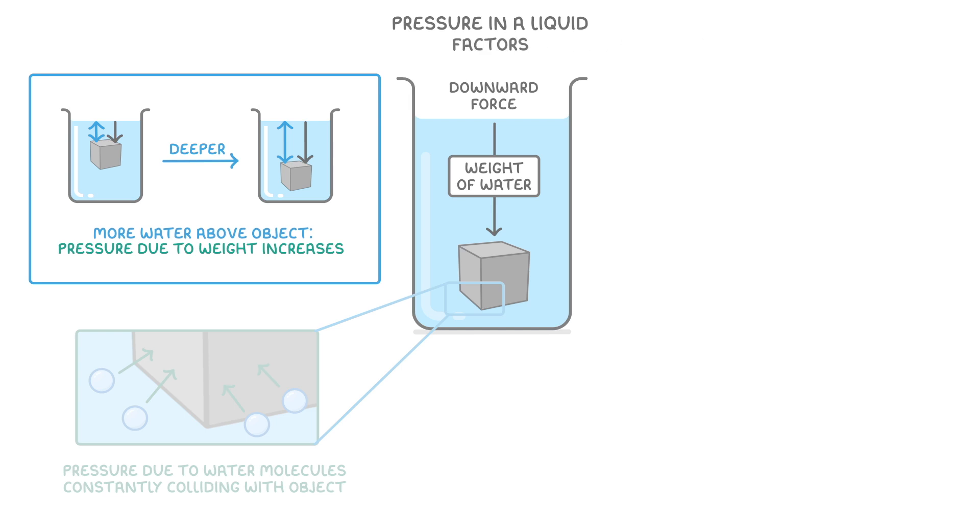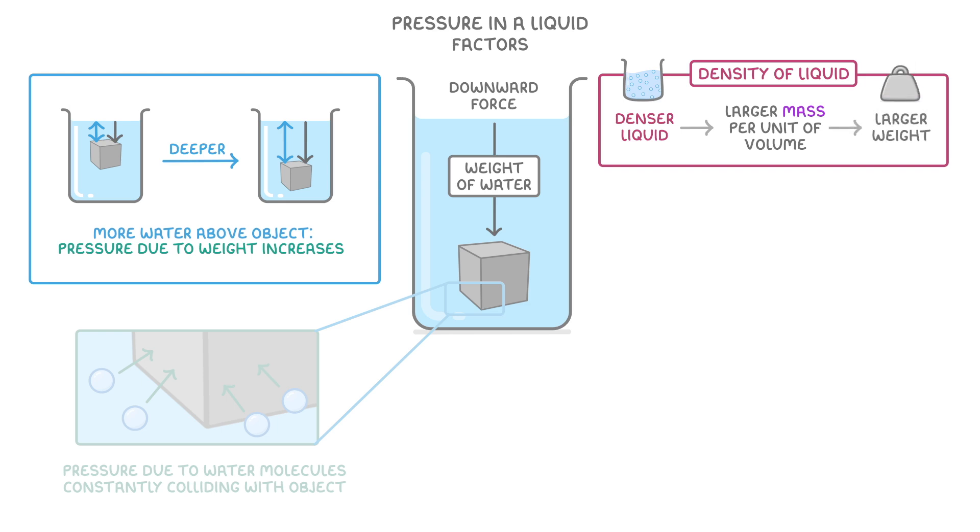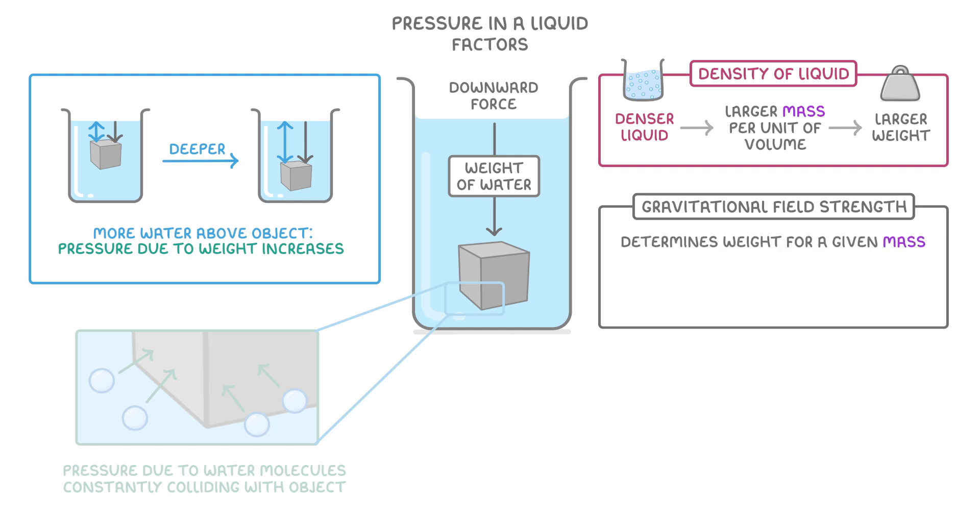Another important factor that determines the pressure is the density of the liquid, because the denser the liquid, the larger its mass per unit of volume, and so the larger its weight will be. And the last factor is the gravitational field strength, as this is what determines the weight for a given mass. So a bigger gravitational field strength would mean a larger weight.